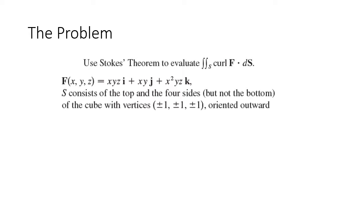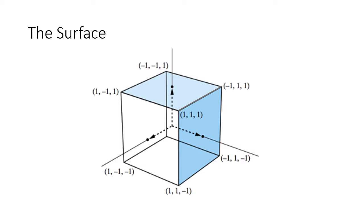This is actually from your textbook, from the Stokes' Theorem section number five. Let's make sure we actually understand the problem first. So my surface S — it's a cube. Each of my vertices are all the different combinations of plus and minus one, which means the origin is at the exact center, and we are oriented outward, so the arrows are pointing out.